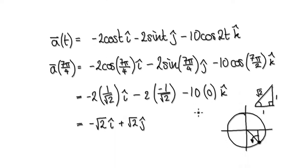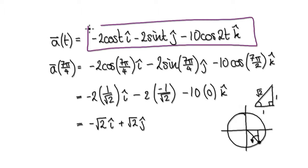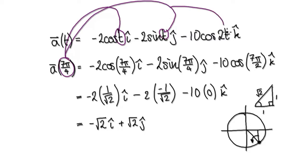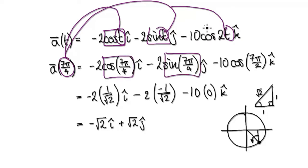So the acceleration — the formula for the acceleration was given in the previous video. At time t = 7π/4, we put this time into each t in the formula. So this term will become this, this term will become this, and this term will become this.